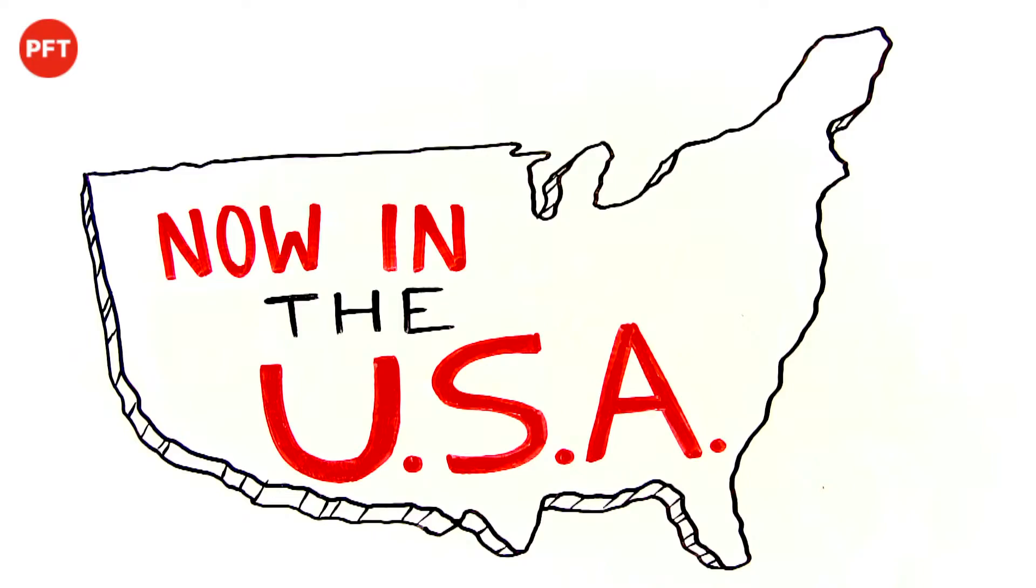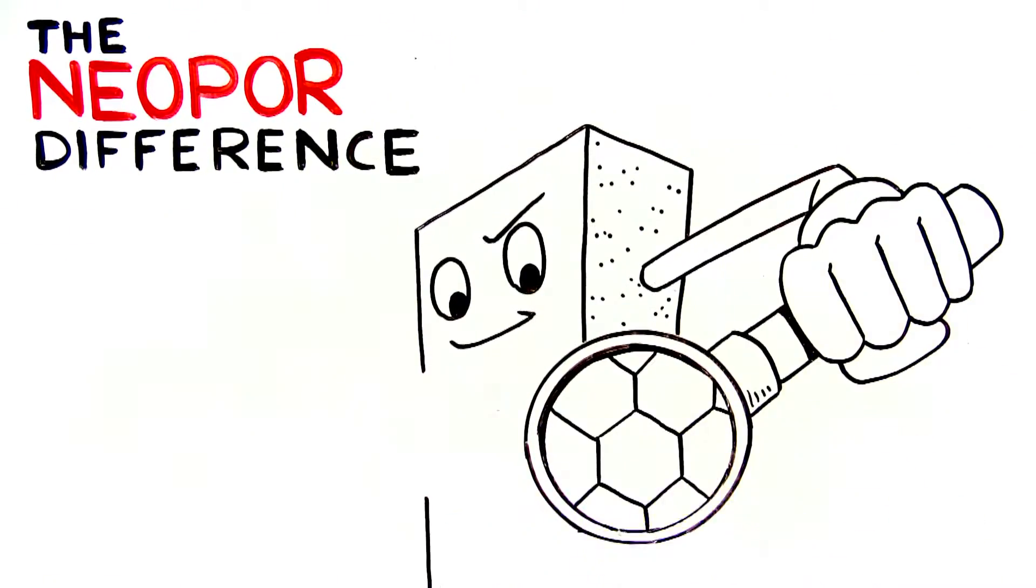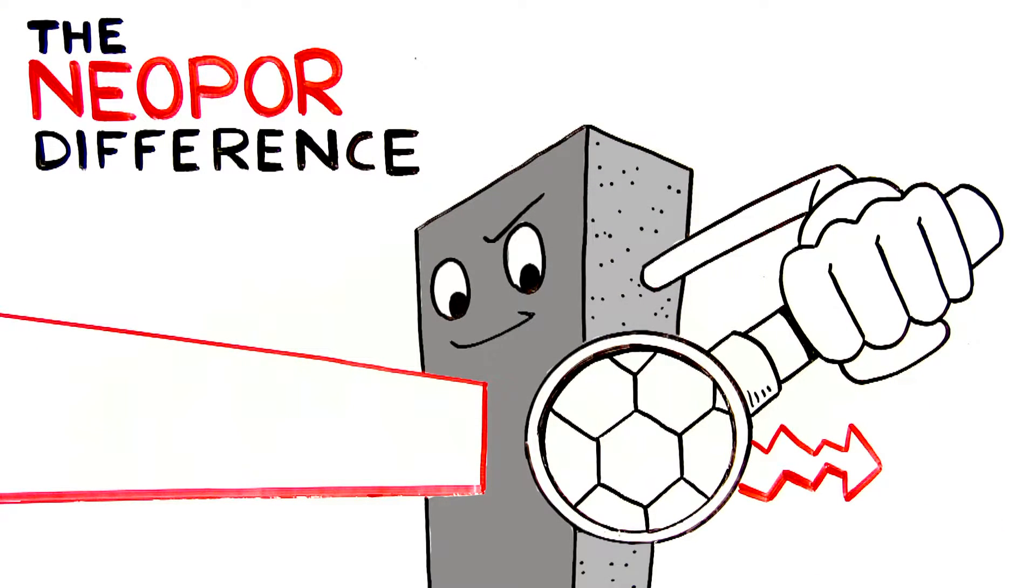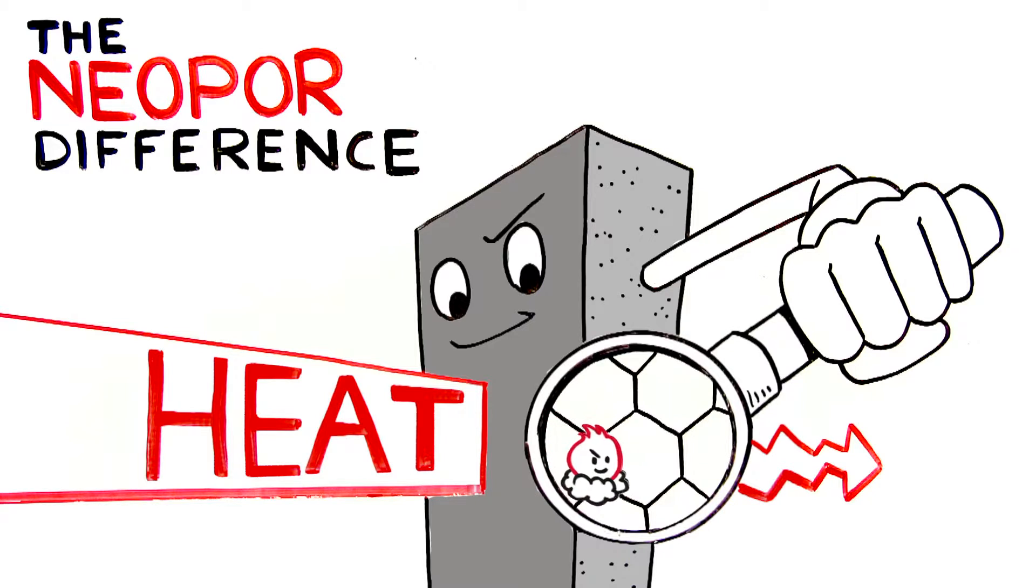Here's how it works. The Neopor difference is that it's infused with reflective graphite particles, which act as little mirrors, reflecting heat hundreds of times as it moves through the insulation, slowing it down.